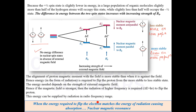When the energy required to flip the electron matches the energy of radiation causing absorption, it is called nuclear magnetic resonance.